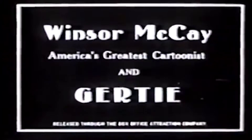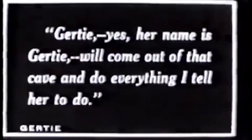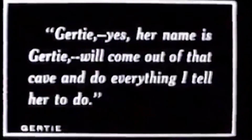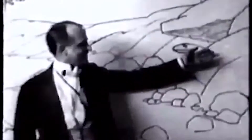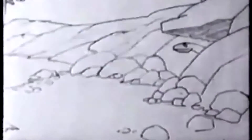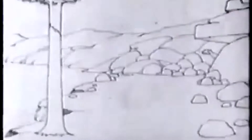In the year 1914, near the time of the war, we were introduced to what is considered to be the first character-based cartoon, named Gertie the Dinosaur, which used the method of hand-drawn animation combined with stop-motion. This was the world's very first cartoon.